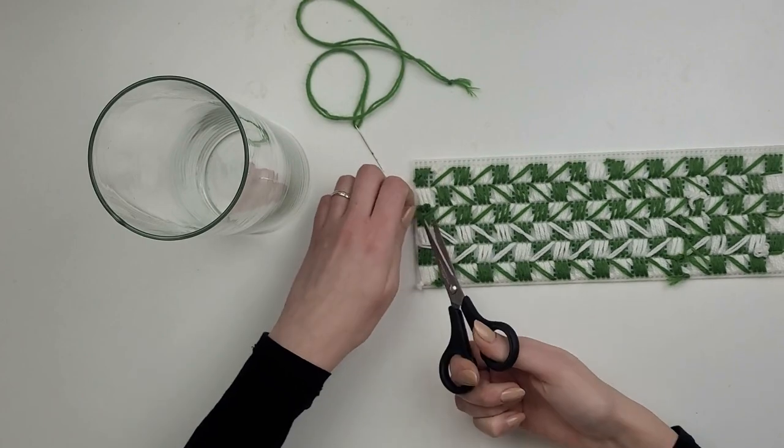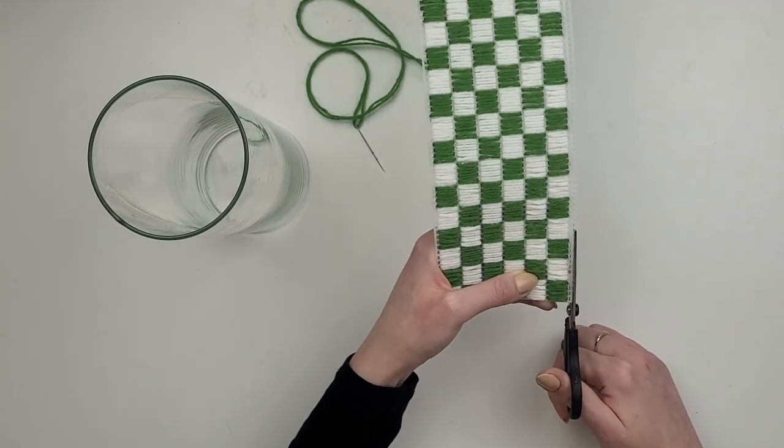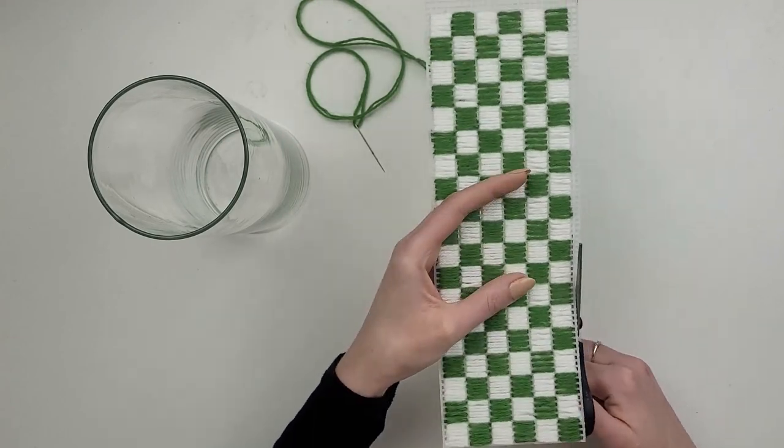Once it's all covered I turn it and cut off any excess yarn. I also cut the plastic canvas a little bit lower.